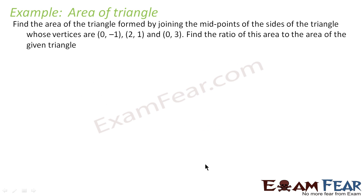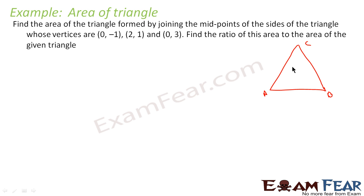You have to find the area of the triangle formed by joining the midpoints of the sides of the triangle whose vertices are A(0, -1), B(2, 1), and C(0, 3). Also we have to find the ratio of this area to the area of triangle ABC.